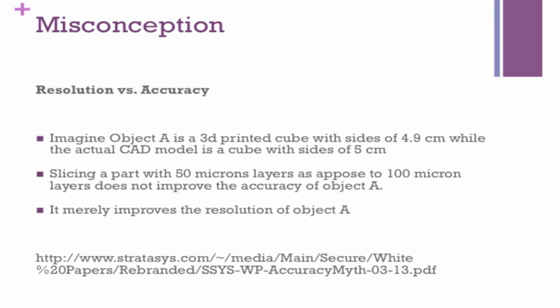I'll start this episode with a misconception: resolution versus accuracy. As you probably already know, commercial 3D printers advertise their layer height resolution — whether it's 50 microns, 100 microns, 200 microns, or less. I want to clarify that layer resolution doesn't really affect the accuracy of the part, because in theoretical terms they are two separate entities.